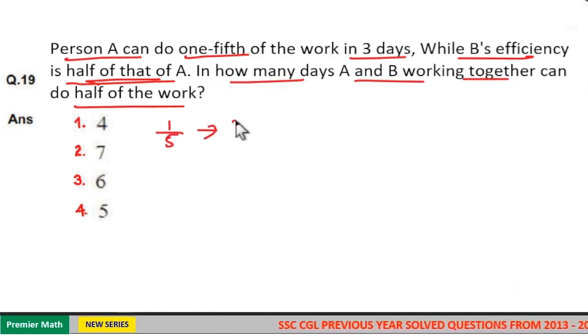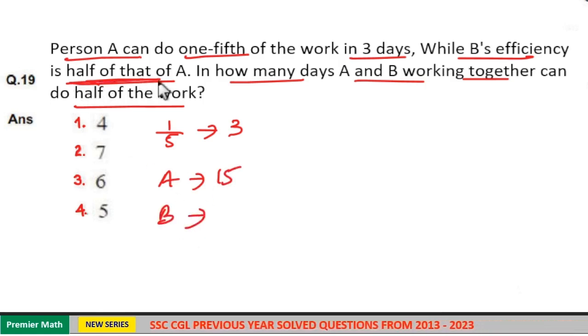completed by A in three days means A can complete one full work in 5 × 3 = 15 days. Now, B's efficiency is half that of A, which means B takes double the time of A to complete the same work. That is, B takes 15 × 2